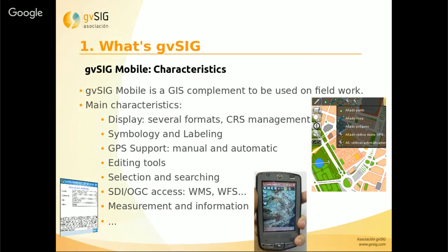Another product is GBC Mobile, which is used for field work. The main characteristics are that we can load several formats — vector and raster files — and we can access remote services such as web map service. We can apply symbology and label vector files, and we have GPS support and several editing tools to create new polygons, lines, or points.